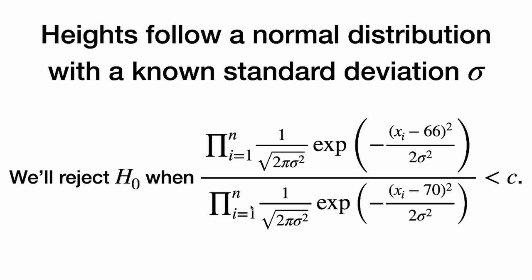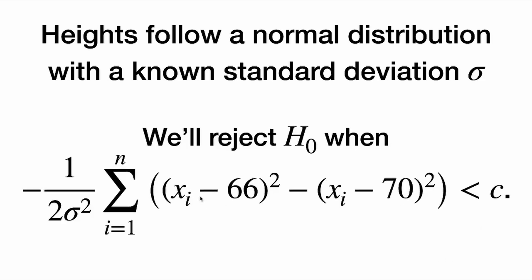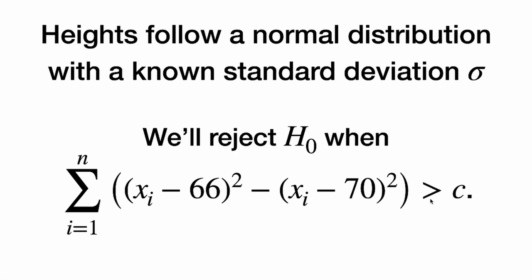A lot of stuff is going to cancel. All of the constants out in front cancel with each other. Then we combine the exponents — we turn this into one exponent, the sum of the null terms minus the sum of the alternative terms. We take the log of both sides to get rid of the exponential. This gives us a new constant, which is just the log of the original C. Now this constant out in front is a negative number, so when we divide through by it, we flip the inequality sign. Now it's greater than, and we expand out the squared terms.